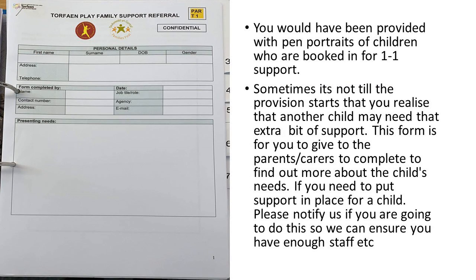Next is the All About Me form — a blank form in case you need it. Any children with one-to-one support will already have their pen portraits in your folder as they would have pre-booked. Sometimes it's not until the provision starts that you realize a child needs extra support. By day two or three on site you might feel a child definitely needs one-to-one support, so this form is for you to hand to that child's parents to find out more about their needs and put support in place. Please notify us first so we can ensure enough staffing. In general, all children who require one-to-one support will already have their pen portraits in your folder.